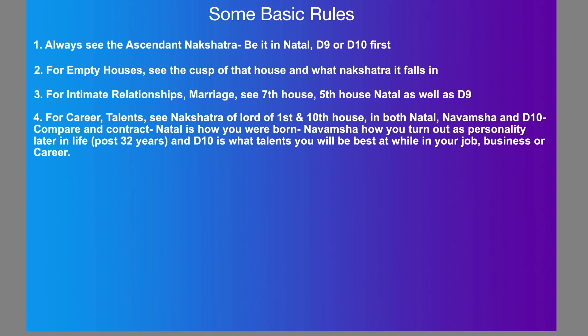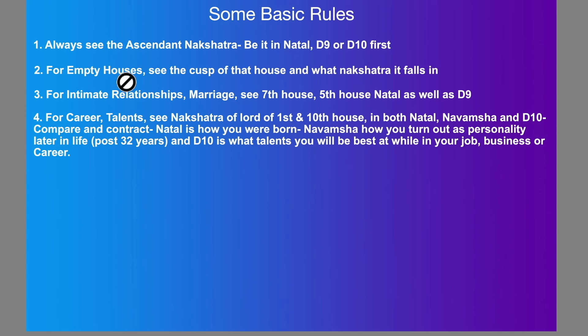The rules are basically the same. To begin with, you can start with these four basic sets of rules. If I have my Vedic Astrology chart in front of me — the natal, the Navamsha, the D10 — how do I start? Always first see the ascendant nakshatra, be it natal, D9 or D10. That's the first starting point. For empty houses, if your tenth house or first house is empty, see the cusp of that house and what nakshatra that falls in. That would also be a good start, because we are seeing it from a nakshatra point of view.